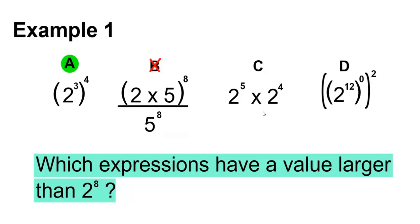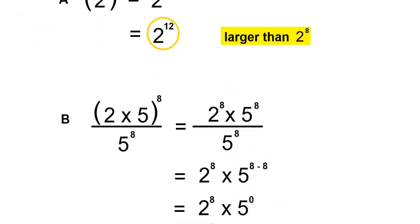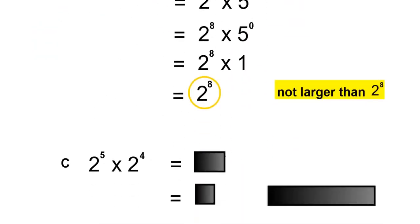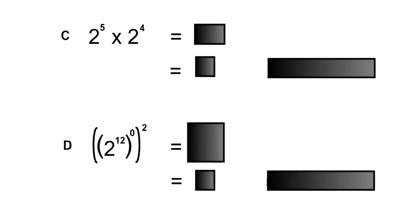Next, we'll simplify C. 2 to the 5 times 2 to the 4.